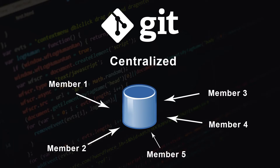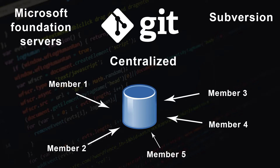In a centralized system, all team members connect to a central server to get the latest copy of the code and to share changes with others. Subversion and Microsoft Team Foundation Server are examples of centralized version control systems. The problem with this architecture is a single point of failure — if the server goes down or goes offline, we cannot collaborate or save snapshots of a project. We have to wait until the server comes back online.